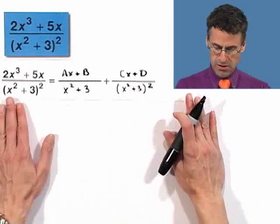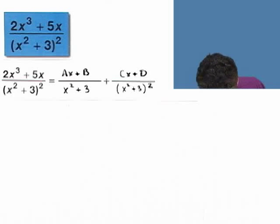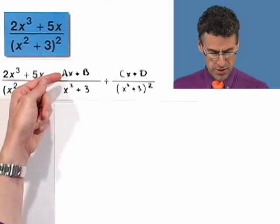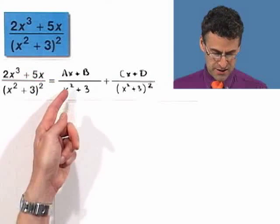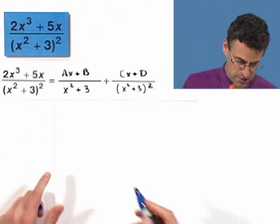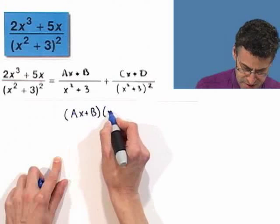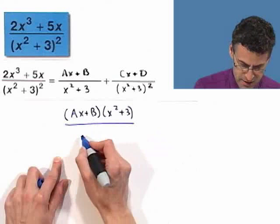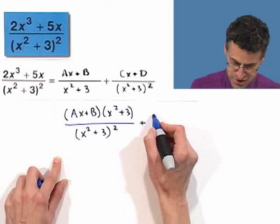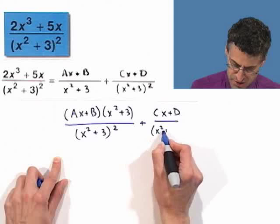And now, just play along as we've been doing. We need to get a common denominator, combine these things, and see what happens. So to get a common denominator, I have to multiply the numerator and denominator of the first fraction by an x squared plus 3, top and bottom, to make it x squared plus 3 squared. So doing so would yield Ax plus B times x squared plus 3, all divided by x squared plus 3 quantity squared. And now I add this other term. And you notice that now the denominators are the same.